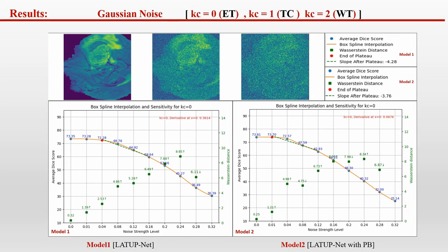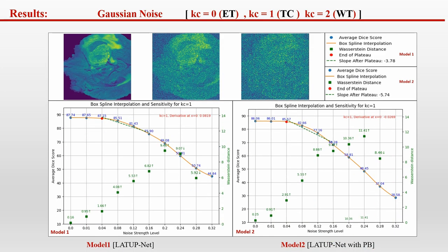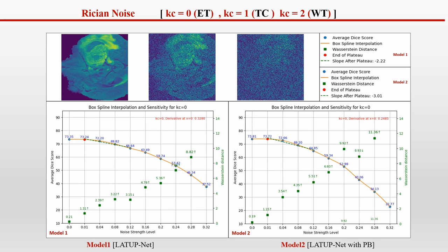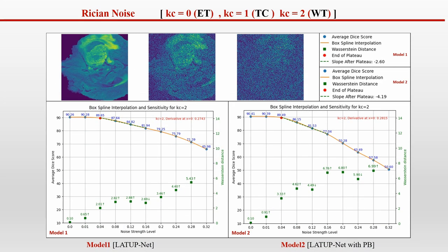For Gaussian noise, both models exhibit a stability radius at noise level 0.04 where there is no drop in performance. Beyond this, we see a linear drop as the noise level increases, consistent across all three tumor regions. However, model 2 experiences a higher drop compared to model 1, especially for the tumor core and whole tumor region, making it more sensitive to this perturbation. We observe a similar robustness plateau at level 0.04 for Rician noise, followed by a linear drop, and model 2 is highly sensitive to this noise compared to Gaussian noise across all tumor regions.